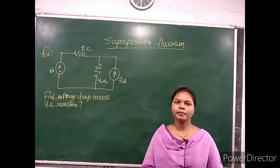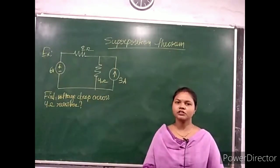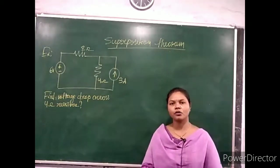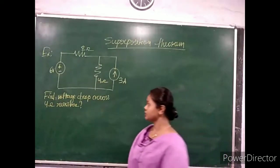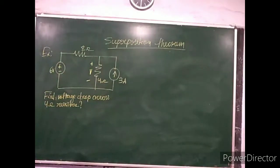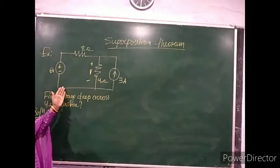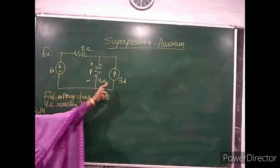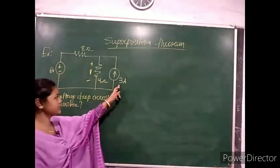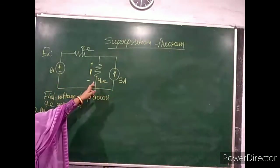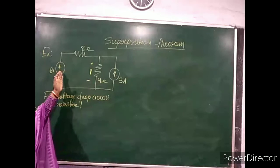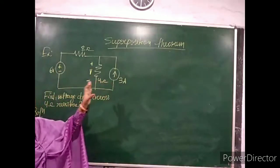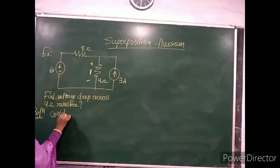Let us discuss an example circuit where the question is to find the voltage drop across the 4-ohm resistor using the superposition theorem. This circuit has two independent sources: one 6-volt voltage source and one 3-ampere current source. We will separately find the voltage across the 4-ohm resistor due to each source.